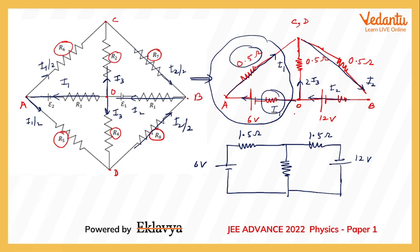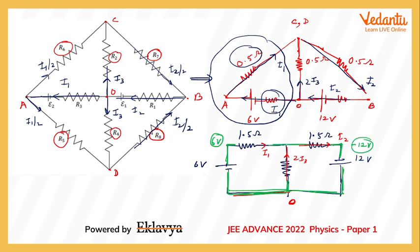I'll solve this simplified circuit using the node potential method. I assign zero potential to the grounded points. This means the 6V battery node is at 6 volts, the 12V battery node is at minus 12 volts, and the unknown node — let's call it Vx — is at the junction of C and D.